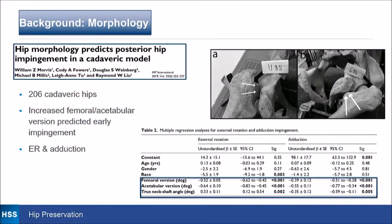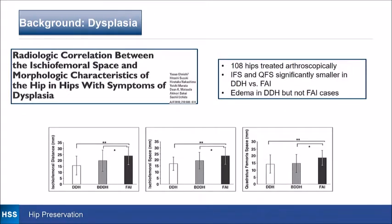A recent cadaveric study of 206 cadaveric hips showed that increased femoral and acetabular anteversion leads to earlier impingement, and it occurs in the position of external rotation and adduction. A study looking at 108 hips treated arthroscopically found that ischial femoral impingement was more common in the DDH and borderline DDH group, with edema in the quadratus muscle in the DDH group but not in FAI cases.